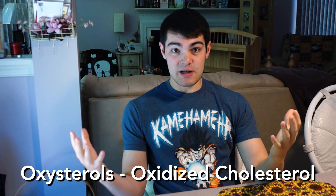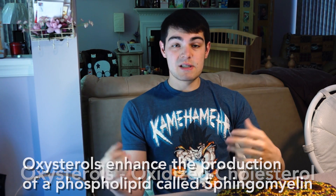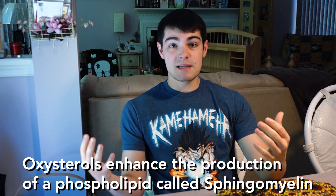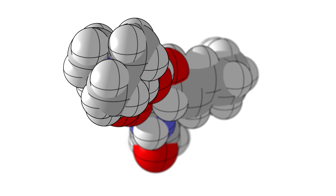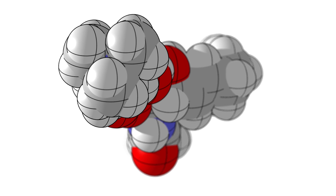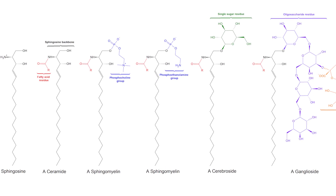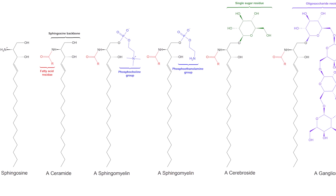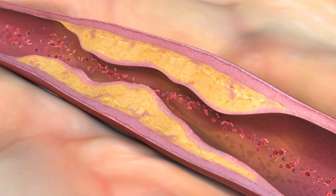Oxysterols, put simply, is oxidized cholesterol, and it's something that can be metabolized. Specifically, oxysterols enhance the production of sphingomyelin, a phospholipid found in the cellular membranes of the coronary artery. Increased oxysterols increases sphingomyelin content in cell membranes, which in turn enhances the interaction between the membrane and ionic calcium, thereby increasing the risk of arterial calcification — the fancy term for this being atherosclerosis.